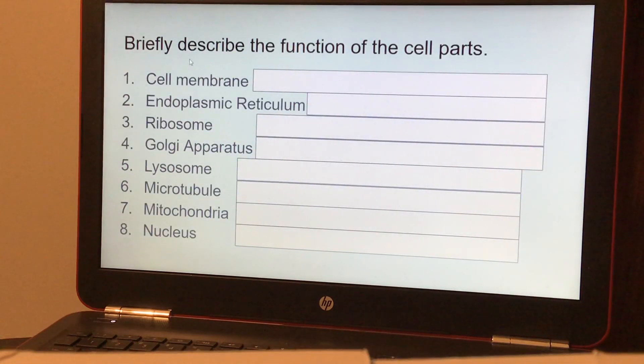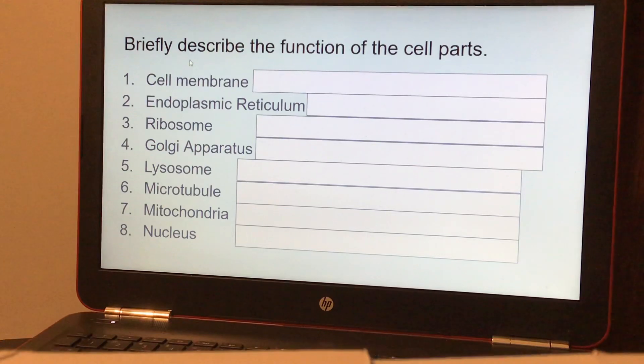You're supposed to briefly describe the function of the cell parts, so I'll help you with that. A cell membrane is a barrier between the cell and outside. Endoplasmic reticulum is for cell transport. Ribosome makes proteins. Golgi apparatus is packaging, processing, and secreting vesicles.